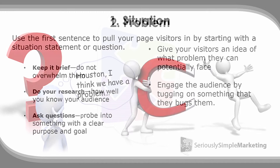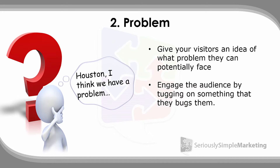Next, mention the problem. Give your visitors a clear idea of what problem they're currently facing and engage that audience by tugging on something that bugs them. Moving beyond the general situation, you define the problem more specifically — for example: 'Have you tried the same yo-yo diet over and over again, only to lose the weight and then bring it back?' Now you're talking about a specific, relatable problem.